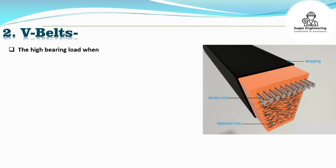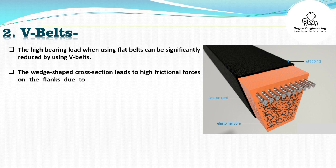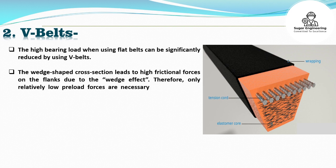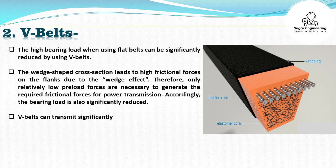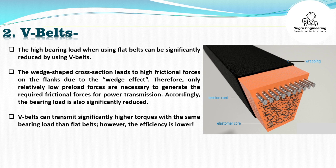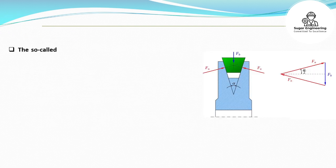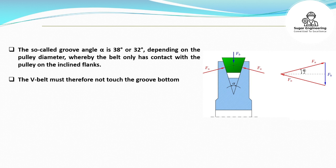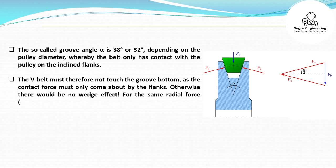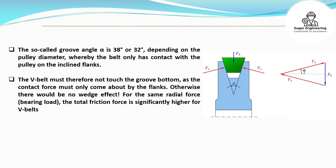V-belts: The high bearing load when using flat belts can be significantly reduced by using V-belts. The wedge-shaped cross-section leads to high frictional forces on the flanks due to the wedge effect. Therefore, only relatively low preload forces are necessary to generate the required frictional forces for power transmission. Accordingly, the bearing load is also significantly reduced. V-belts can transmit significantly higher torques with the same bearing load than flat belts. However, the efficiency is lower. The so-called groove angle alpha is 38 degrees or 32 degrees, depending on the pulley diameter, whereby the belt only has contact with the pulley on the inclined flanks. The V-belt must therefore not touch the groove bottom, as the contact force must only come about by the flanks — otherwise there would be no wedge effect. For the same radial force (bearing load), the total friction force is significantly higher for V-belts.